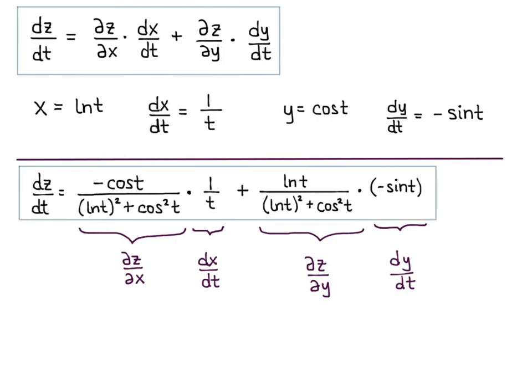Notice that the only variable in our final answer is t. We replaced all of the x and y variables with their t functions, so that we end up with a single-variable answer. When applying the chain rule, just be sure to break it down and do it in steps, like we did in this video.